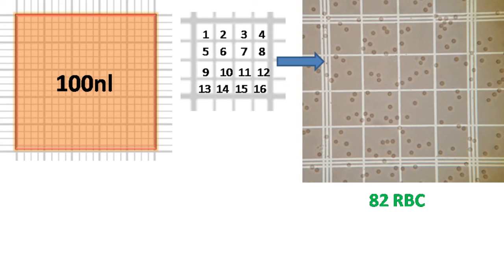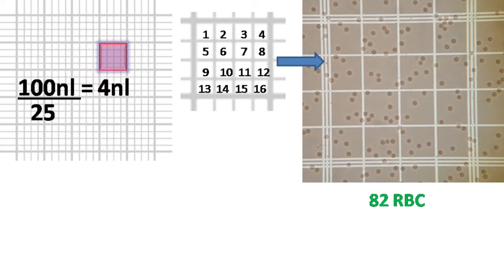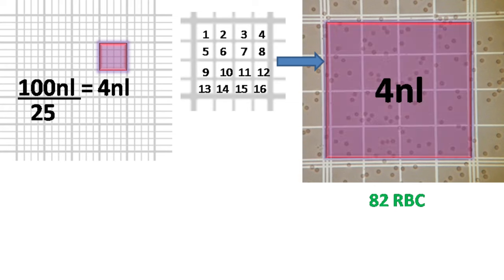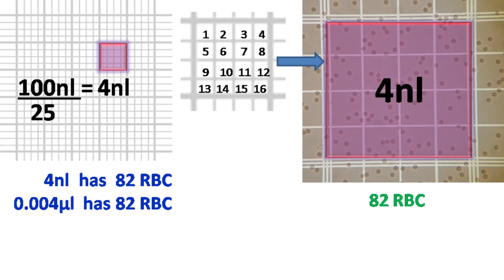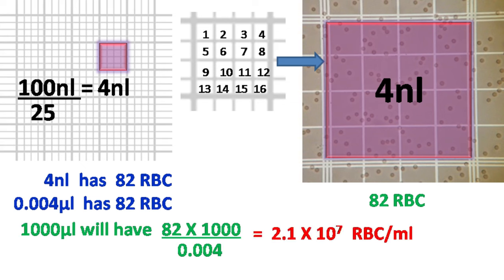As there are 25 sub squares, the volume occupied by each of the sub squares is gonna be 100 divided by 25, that is 4 nanoliters. This means 4 nanoliters have 82 RBCs. So 1000 microliters, that is 1 ml, is gonna have 2.1 into 10 raised to 7 RBCs per ml.